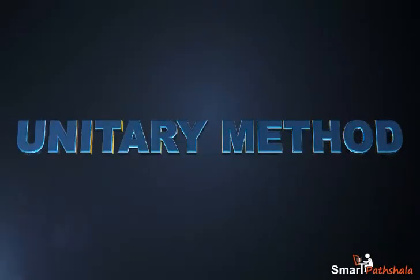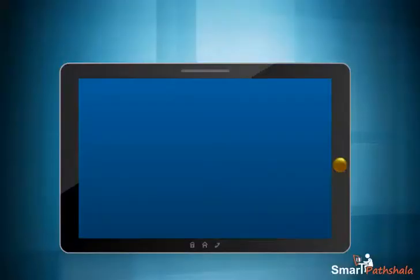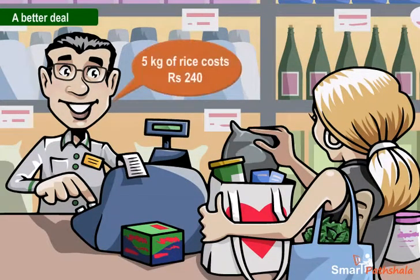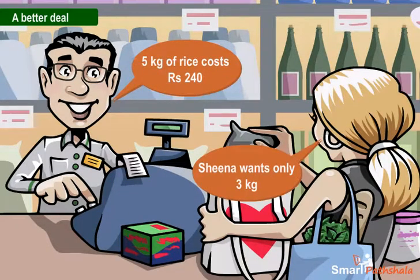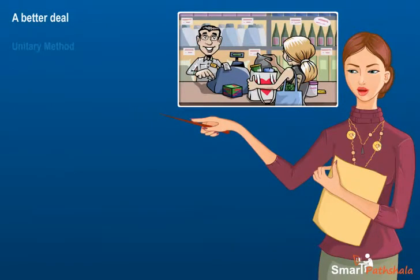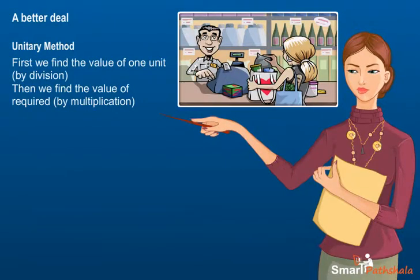Unitary method. This module will explain the basics of unitary method. Sheena went to a shop for buying rice. The shopkeeper told that 5 kg of rice costs Rs. 240. Sheena wants only 3 kg. Then how do we calculate the cost of 3 kg of rice? We can use unitary method to find its solution. The method in which we find the value of one unit and then find the value of required quantity is called unitary method.